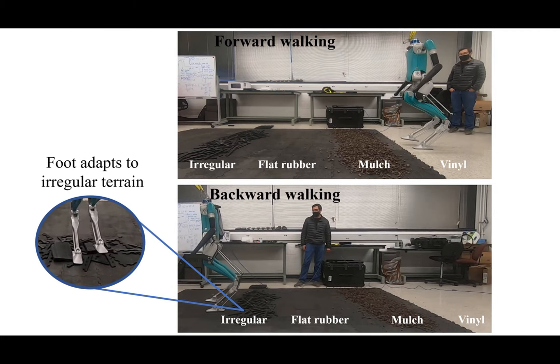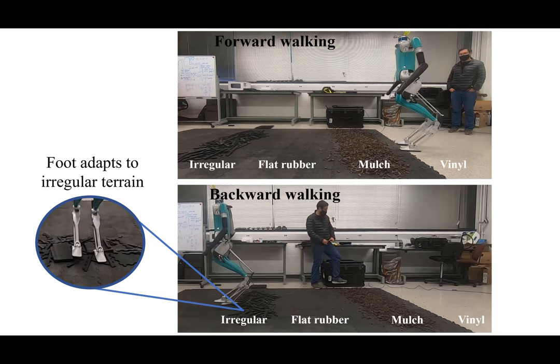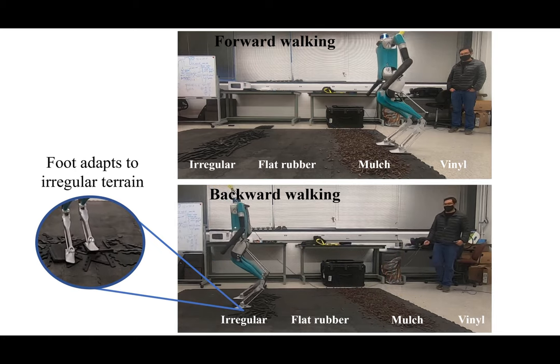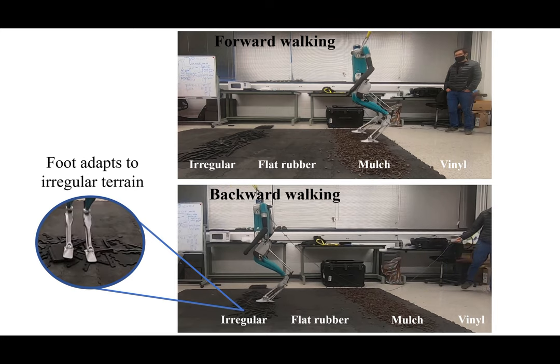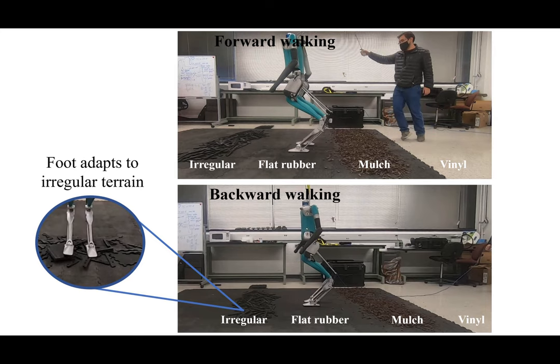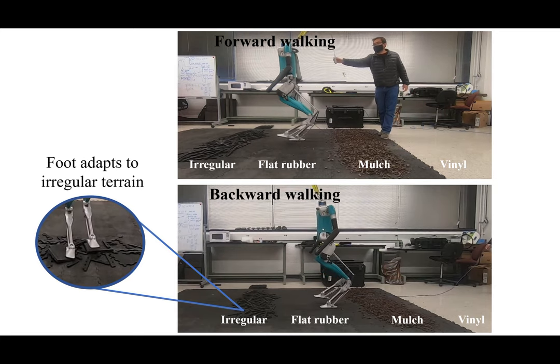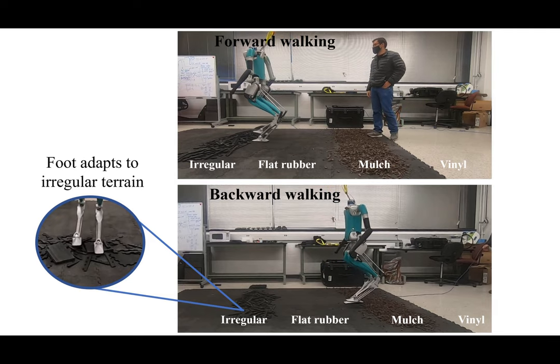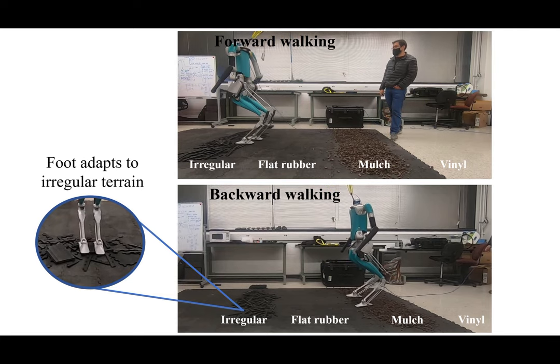To further evaluate the robustness of the learned control policy, we make Digit walk forward and backward on various terrains with different levels of difficulty. These terrains include flat vinyl ground, mulch, flat rubber ground, and irregular rubber terrain. The controller is able to adapt to any of these terrains while maintaining a stable and robust walking gait.